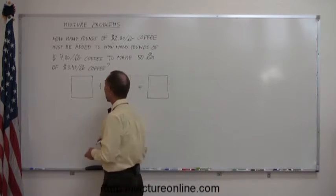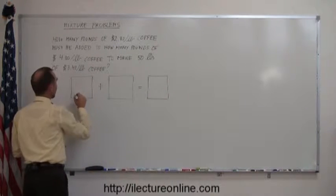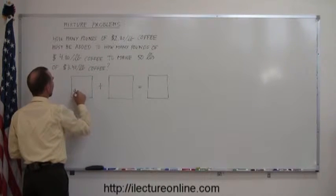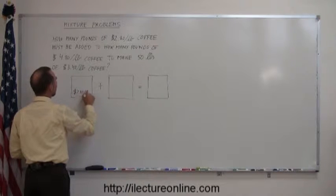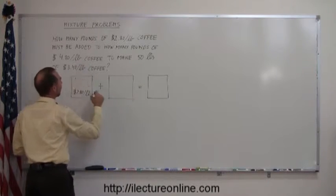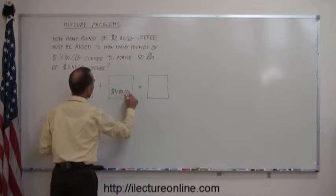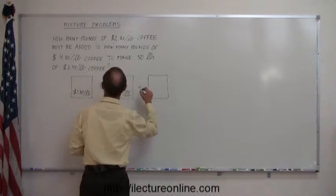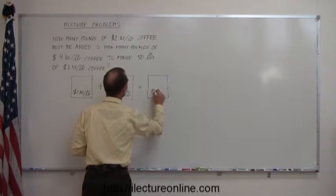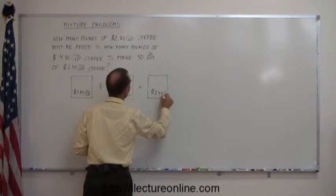So we can write down the cost per pound of each type. Here we have $2.80 per pound of coffee. Here we have a mixture that is $4.80 per pound, and then we add those two together, we end up with coffee that should cost $3.40 per pound.